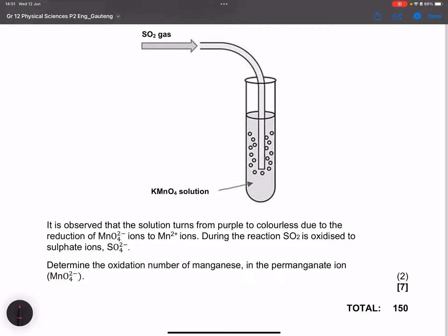So they say it is observed that the solution turns purple to colorless due to the reduction of the permanganate ion into the Mn2 plus ion. They say during the reaction, sulfur dioxide is oxidized to sulfate ions. Now they say determine the oxidation number of manganese in the permanganate ion.